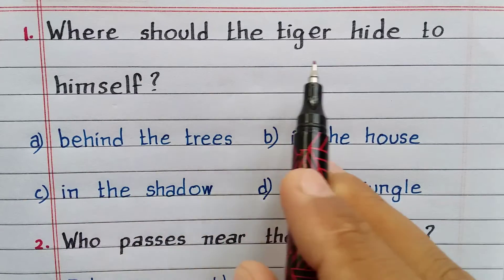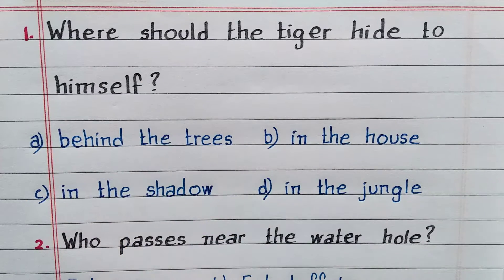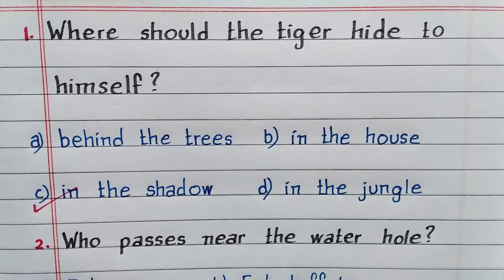Where should the tiger hide to camouflage himself? Option C. In the shadow.